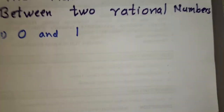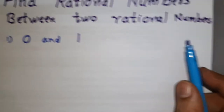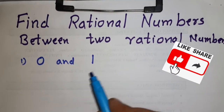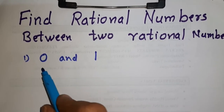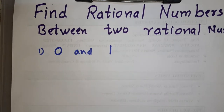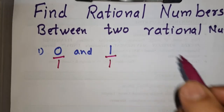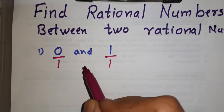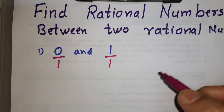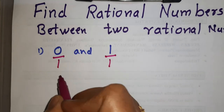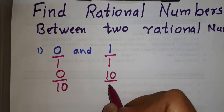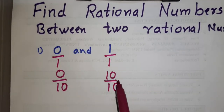Here we have a question: find rational numbers between two rational numbers. We know that 0 and 1 are rational numbers. Between 0 and 1 on the number line we cannot identify any natural number. To write rational numbers between them, we first write them in p by q form: 0 as 0 upon 1 and 1 as 1 upon 1. We then multiply both numerator and denominator by 10, giving 0 by 10 and 10 upon 10.